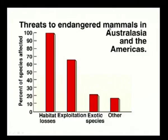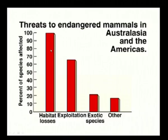Looking at threats to endangered mammals in Australia and America, the diagram shows that habitat loss is the biggest threat, followed by exploitation, exotic species, and others. Habitat loss is a major threat because all species are interrelated — for example, the squirrel's habitat is trees, and when we cut trees, the squirrel has nowhere to go. Naturally, habitat loss is the biggest threat to biodiversity.